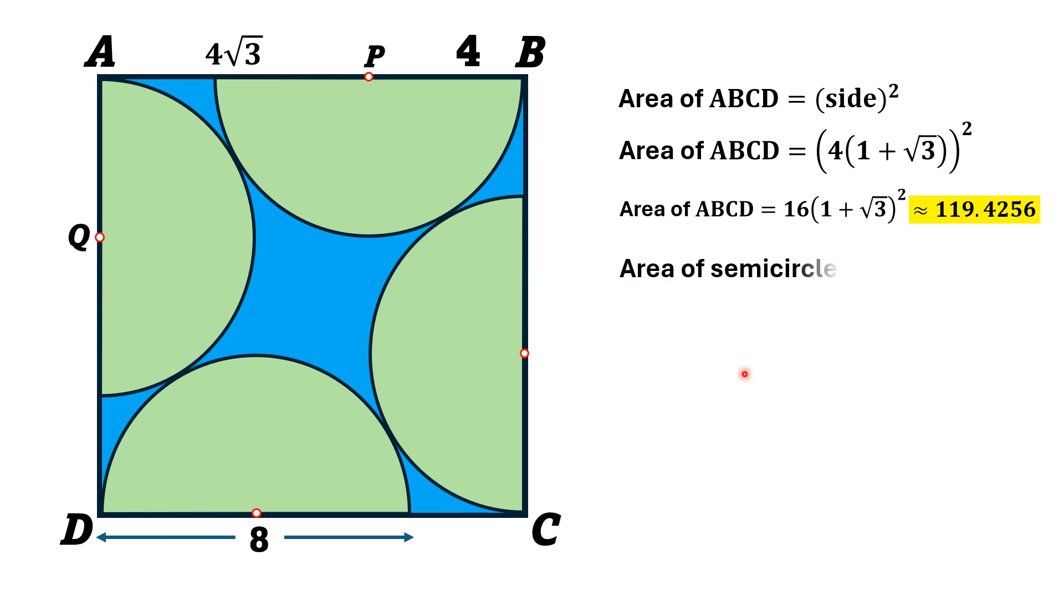Now, we find the area of semicircle. Area of semicircle is equal to pi r square divided by 2 and if we calculate the area of four semicircles, four identical semicircles, that is equal to 4 times pi r square over 2, here r is equal to 4, so substituting here, thus area of four semicircle is equal to 32 pi square units.